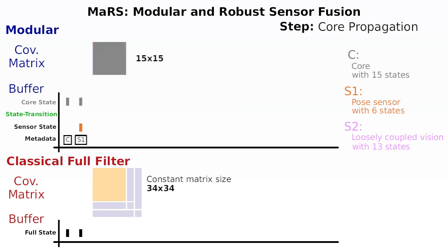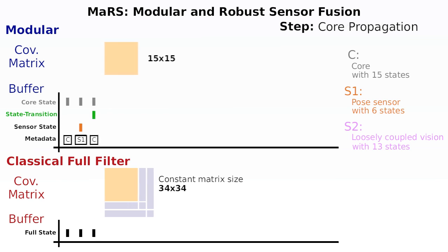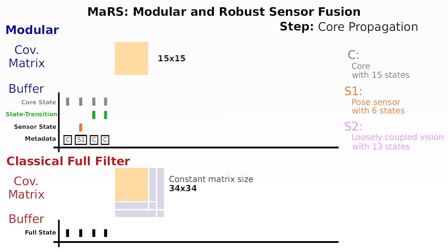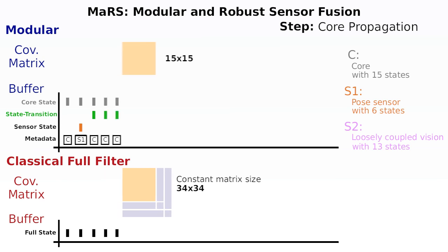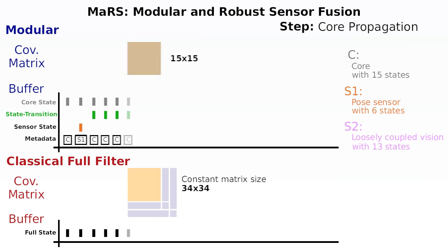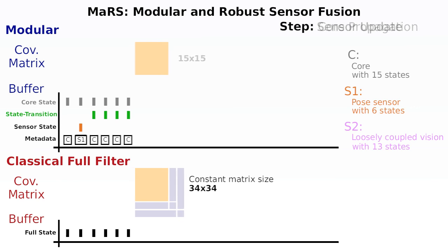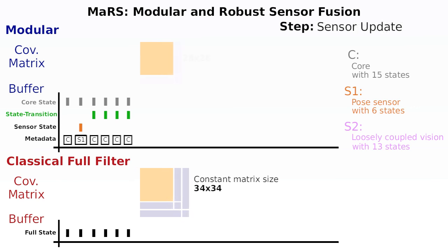Now we are performing four propagation steps. The modular approach only requires the latest core state to propagate the core state and covariance. The core state is stored together with the state transition matrix that has been used for the propagation. The classical approach performs the propagation, which affects the core states and the full covariance matrix, which again requires more mathematical operations.